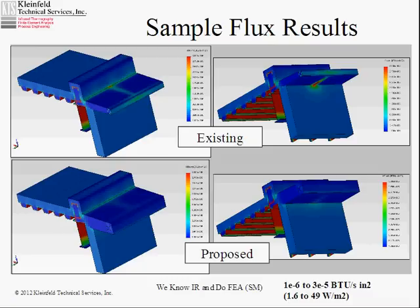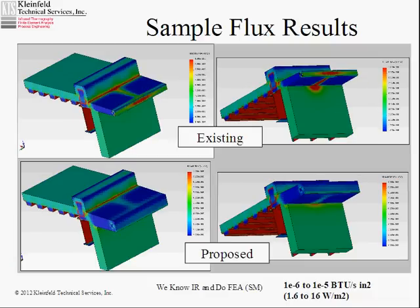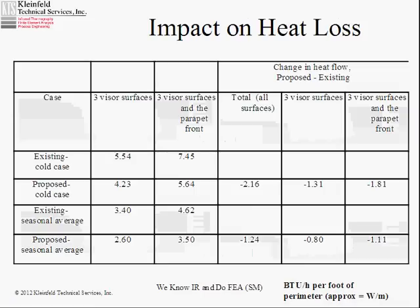This is a comparison of the existing and proposed. These are flux results in BTUs per second per inch squared, or watts per meter squared. You can see there's a significant loss in the existing, and not so much in the proposed. The design changes resulted in a considerable reduction in flux from the surfaces. Looking at a tighter span, you can see more clearly what's going on. There is a loss on this edge even in the proposed — part of it is difference in boundary conditions between the front and the bottom. The bottom sees the ground as a radiation target; the front sees the sky as a radiation target, and those are two significantly different target temperatures.